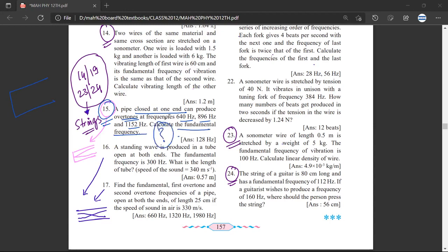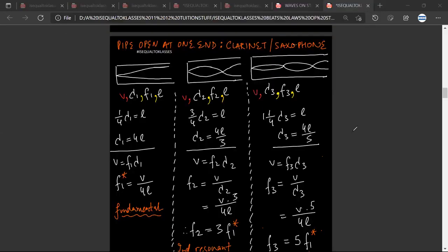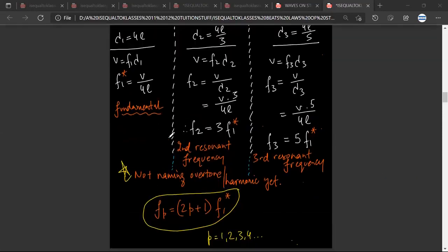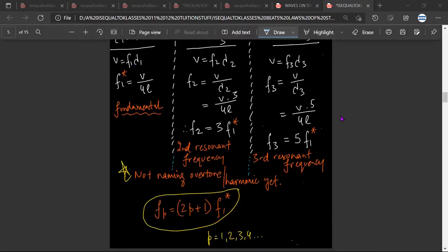Sir, they have given two consecutive frequencies, so if we minus them we'll get 2f1. They have said 3f1 and 5f1, so if we minus 3f1 from 5f1, then we get 2f1.